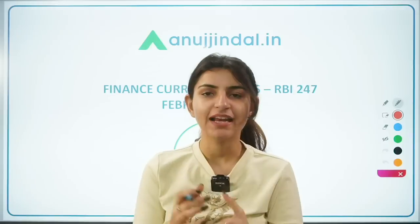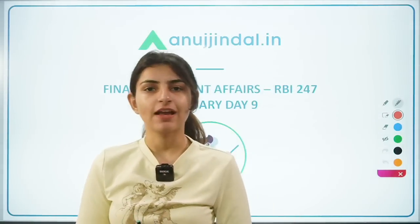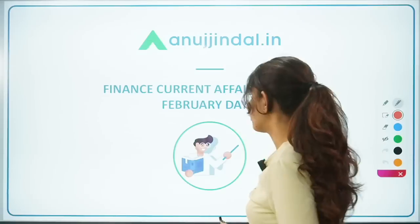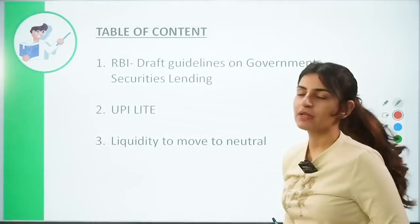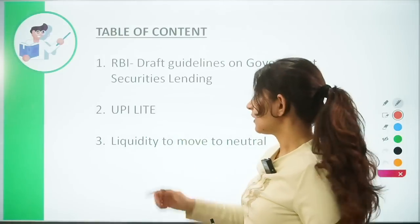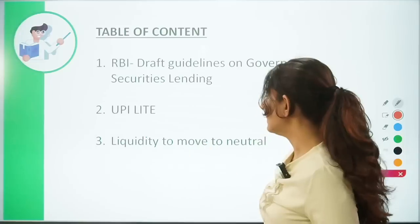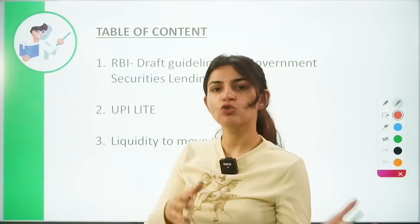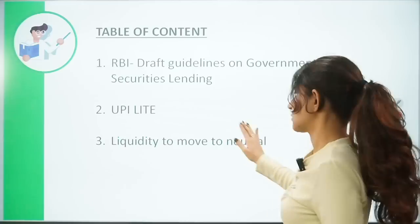Hi everyone, a very good morning to all of you. My name is Karnama and I welcome you all to another session of RBI 247, wherein we discuss finance current affairs relevant for RBI Grade B and SEBI Grade A exams. In today's video, we're going to talk about three important topics: draft guidelines for government securities lending, UPI Lite, and liquidity moving to neutral — from surplus to neutral in the economy.